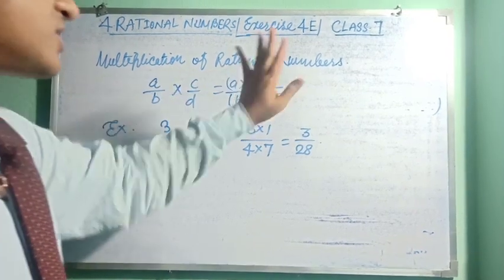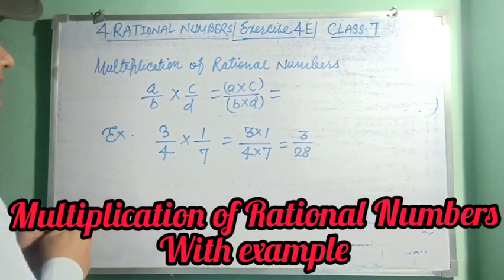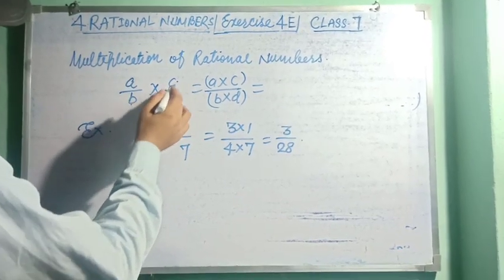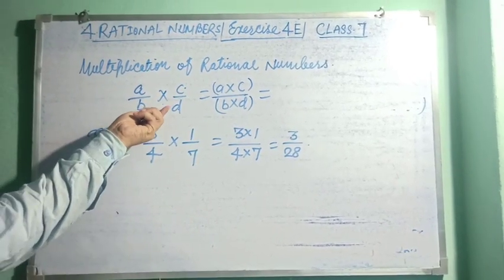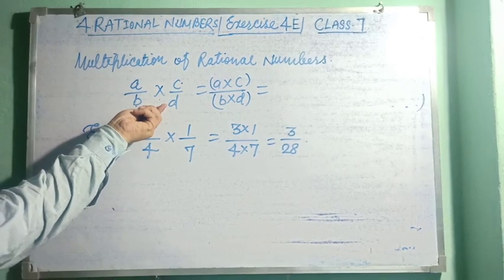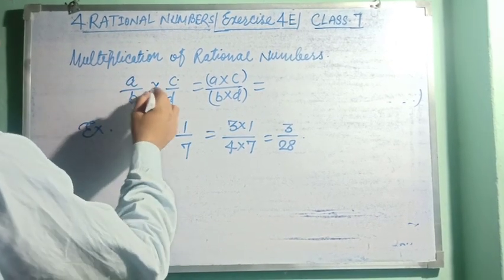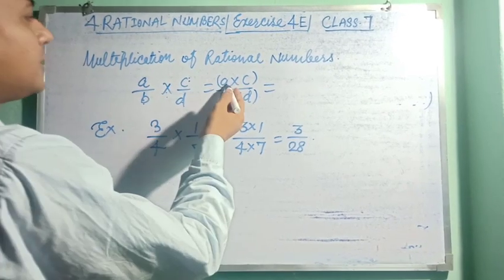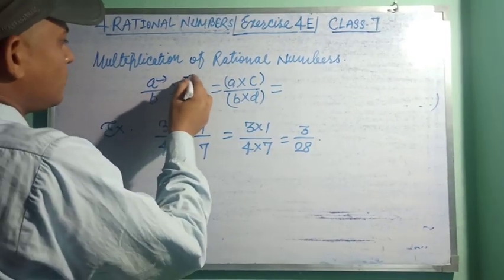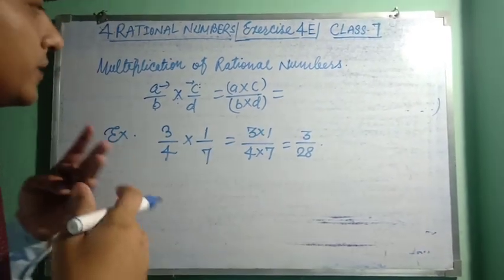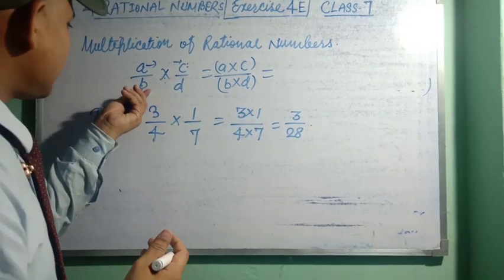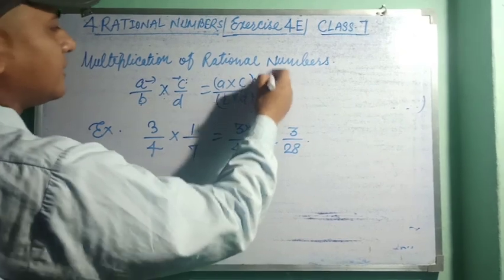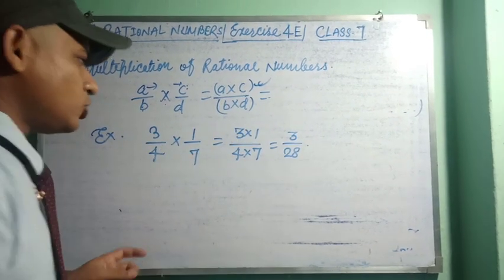In order to solve Exercise 4A, first of all we learn about the multiplication of rational numbers. There are two rational numbers a/b and c/d. Then we have to find their product — a/b multiplied by c/d can be written as a multiplied by c in the numerator, divided by b multiplied by d in the denominator. Or we can say: the product of numerators divided by the product of denominators.